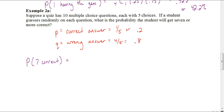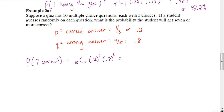Let's start by finding the probability of getting exactly seven correct answers. We take ten choose seven, because there are ten questions, multiply by 0.2 to the seventh power since the probability of one correct answer is 0.2, and then multiply by 0.8 to the third power — because seven plus three equals ten, our total number of trials. That gives us the probability of getting seven correct, which is 0.00786.